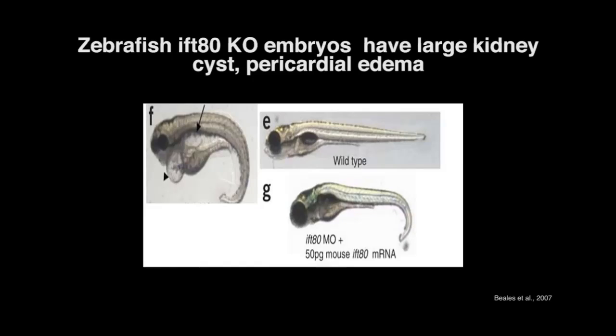E shows a wild type or normal zebrafish embryo. F shows a zebrafish embryo lacking the IFT-80. One can clearly see the difference. Zebrafish IFT-80 knockdown embryos are characterized by large kidney cysts as shown by the arrow and curved tail. This phenotype is rescued once IFT-80 morpholino is injected back to the zebrafish as shown in G.